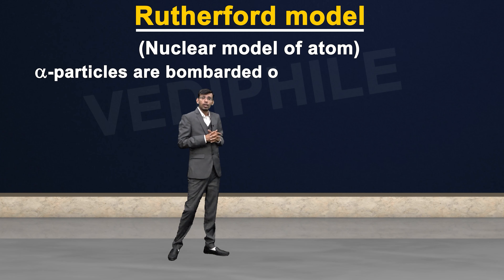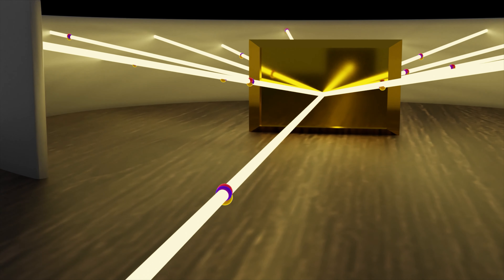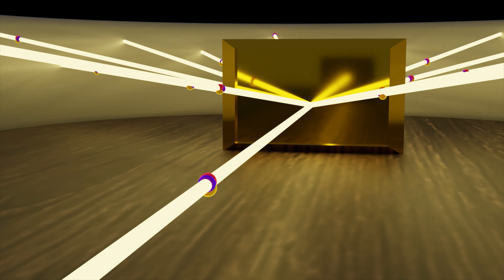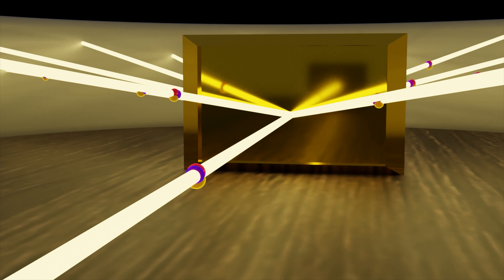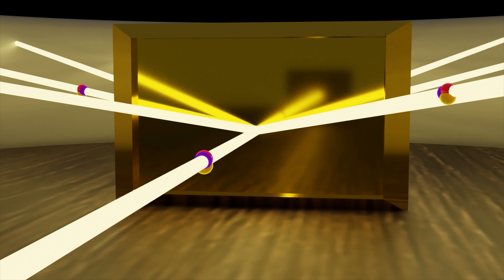In that experiment, they bombarded a very thin gold foil — around 100 nanometer thickness — with alpha particles. The gold foil was very thin, around 100 nanometers, and it was bombarded with alpha particles.